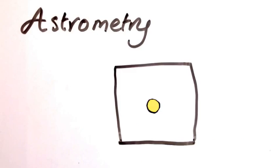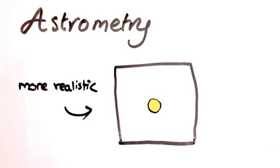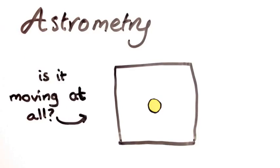This is called astrometry. But think about how difficult that can be. The star doesn't generally move very much, and if that's compounded by the star being far away, it can be very hard to directly see the star moving at all.